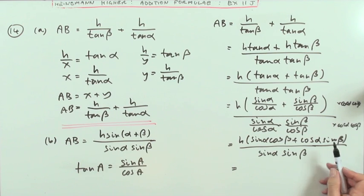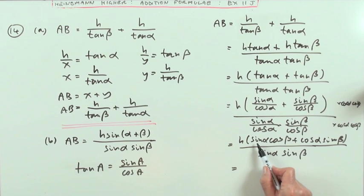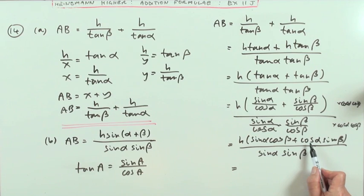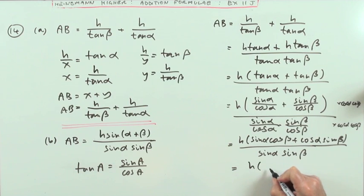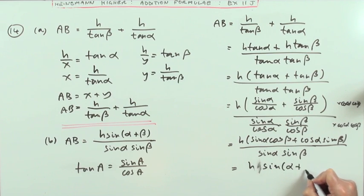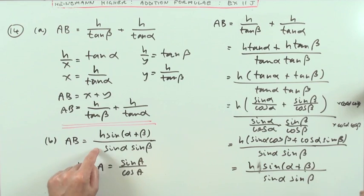Then finally you recognize the top as the expansion for sin of the sum, because I've got the sine cos on one side and the sine cos on the other side of the sum and they switch angles. So that's the same as h times - I won't need the bracket anymore - sine alpha plus beta over sine alpha sine beta, as was required.